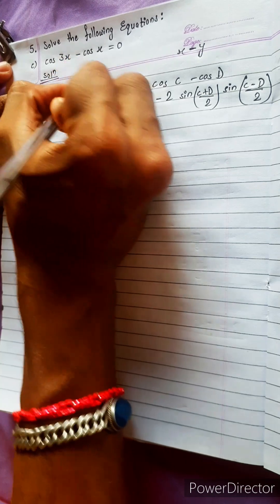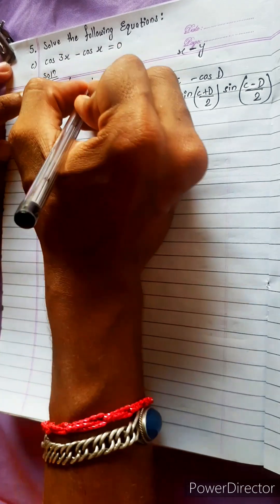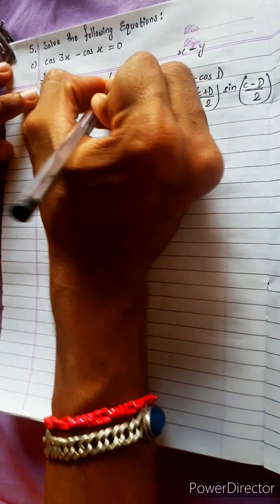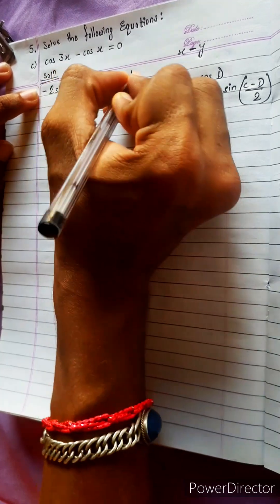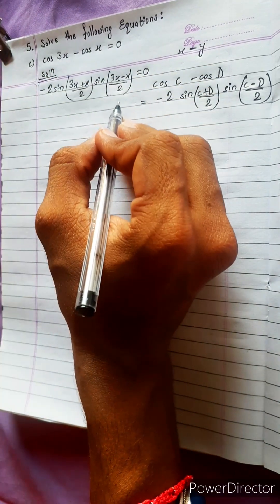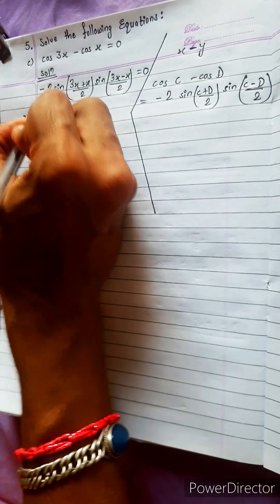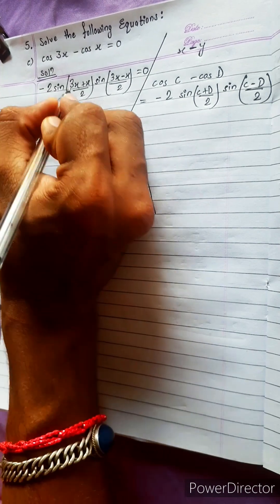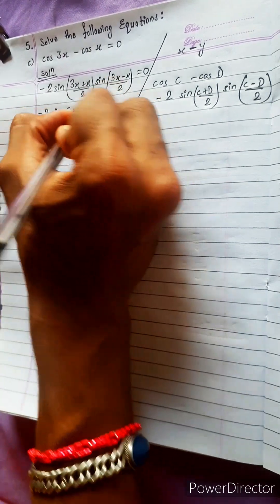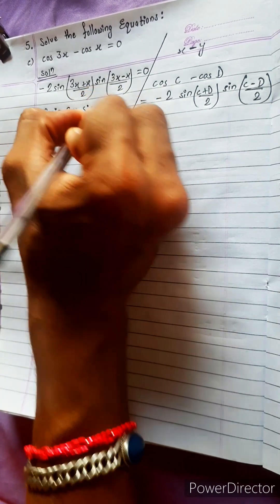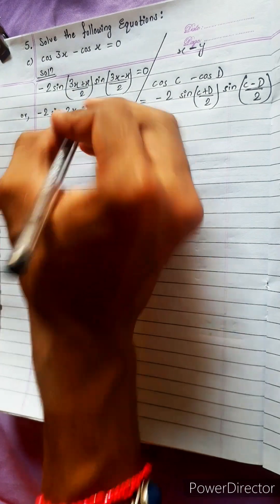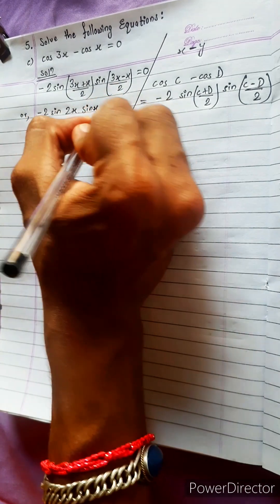So we get 3x plus x by 2, multiply with sin of 3x minus x by 2. That gives minus 2 sin of 4x over 2, which is 2x, times sin of 3 minus 1 over 2. Since 3 minus 1 is 2, and 2 by 2 is 1, we get only sin x.